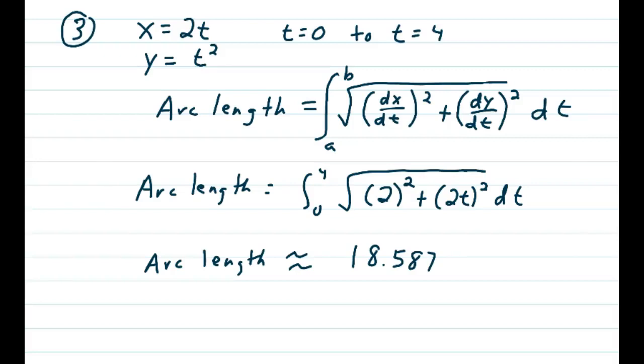Problem 3 on arc length, almost going back to the beginning of the course, except this is in parametrics. So x equals 2t, y equals t squared, and we're finding the arc length from t equals 0 to t equals 4.